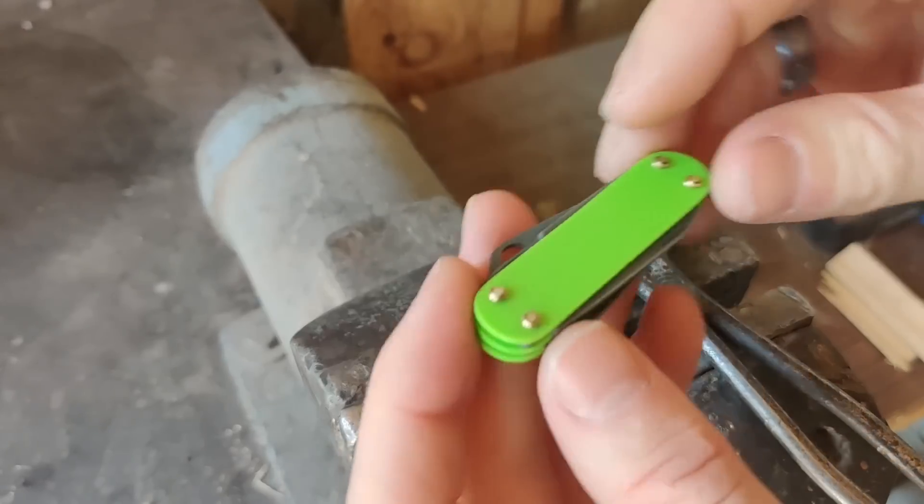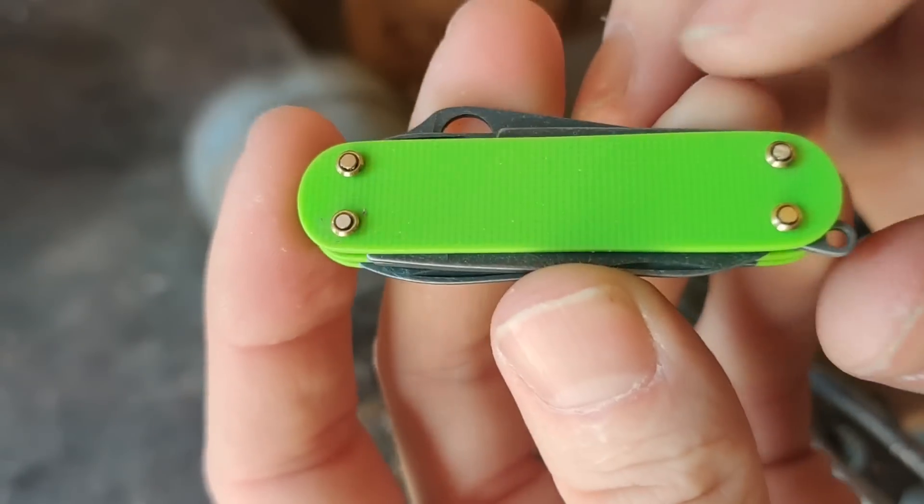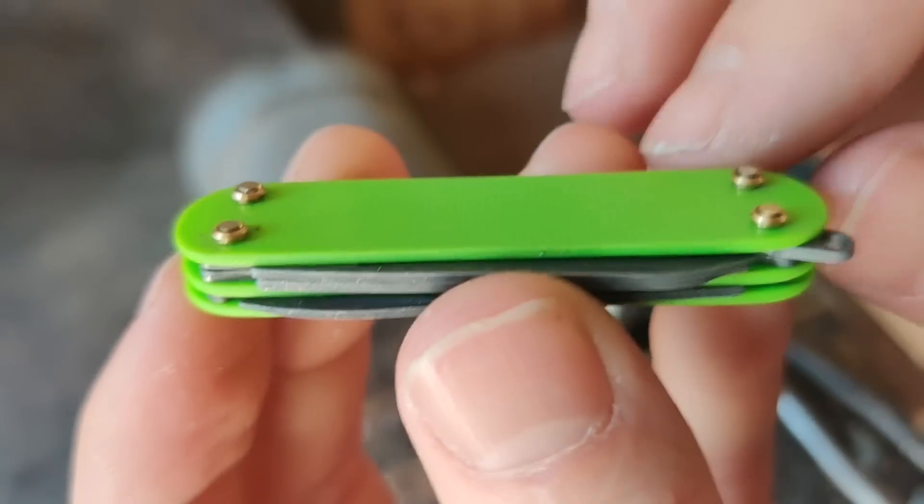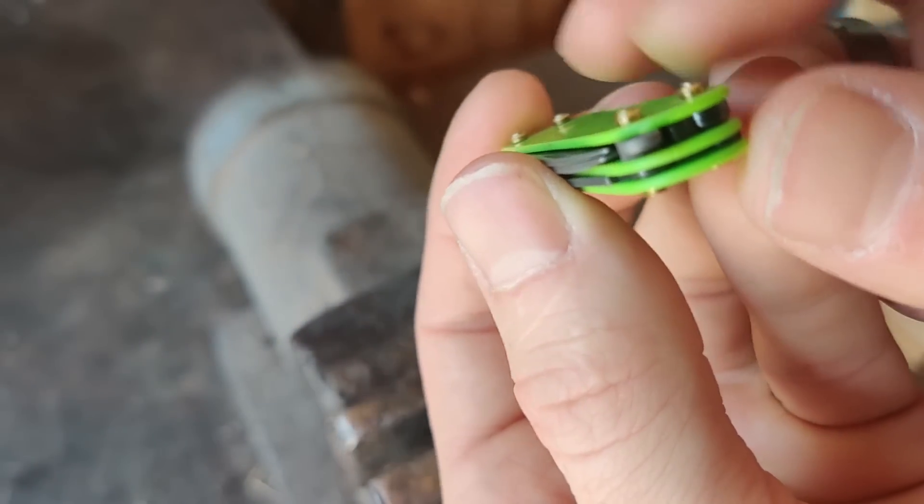Alright, so I have put the brass grommets, washers, whatever, on top. And also using the Dremel, I have cut off the excess of the brass rods. Alright, so you can see I left just a little bit.